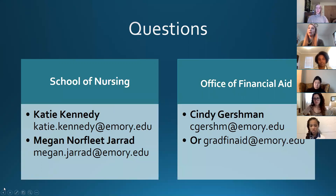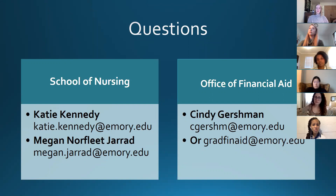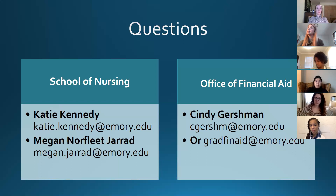Are merit-based scholarships based on undergraduate GPA or only once you're in the program? We use a cumulative GPA — we consider every college class you've ever taken before starting the program. If a scholarship becomes available during the program, we'll consider your GPA from the program specifically. Regarding the grant amount for summer and fall 2022: the grant is determined by your FAFSA and we can't guarantee the amount, but $3,000 is what we typically see and it's been consistent for years.